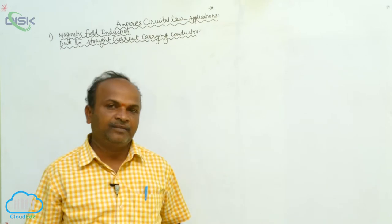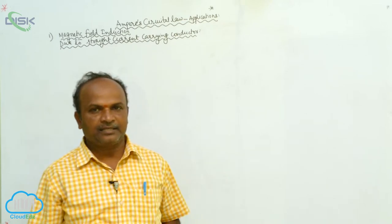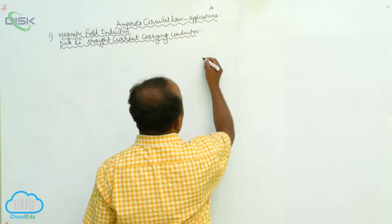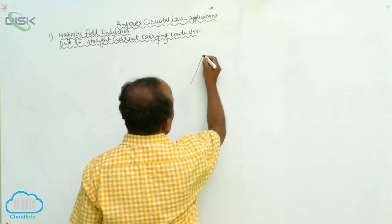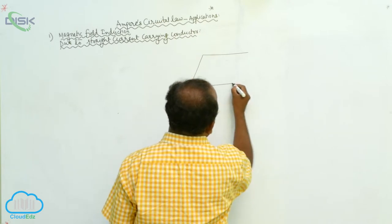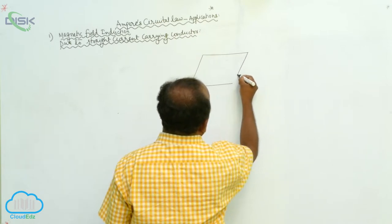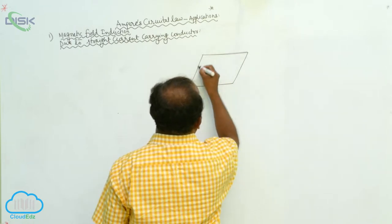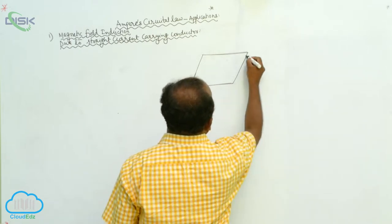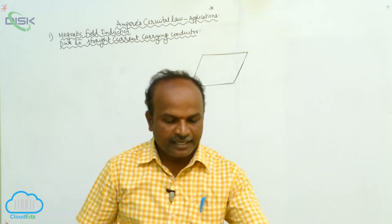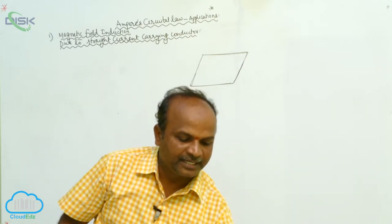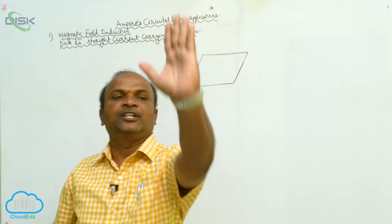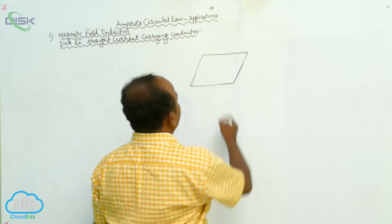Around the conductor, the magnetic lines of forces are concentric circles, at which the current carrying conductor is located at the center of the concentric circles. The current is passing in the upward direction through the plane.